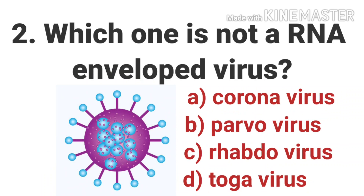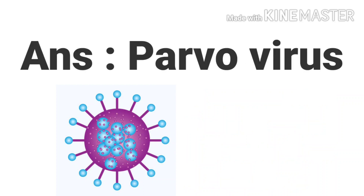The second question is: which one is not an RNA-enveloped virus? The options are Coronavirus, Parvovirus, Rhabdovirus, and Togavirus. The answer is Parvovirus. Parvovirus is a contagious virus mainly affecting dogs, highly contagious and spread directly dog-to-dog by direct or indirect contact with their feces. The correct answer is Parvovirus.